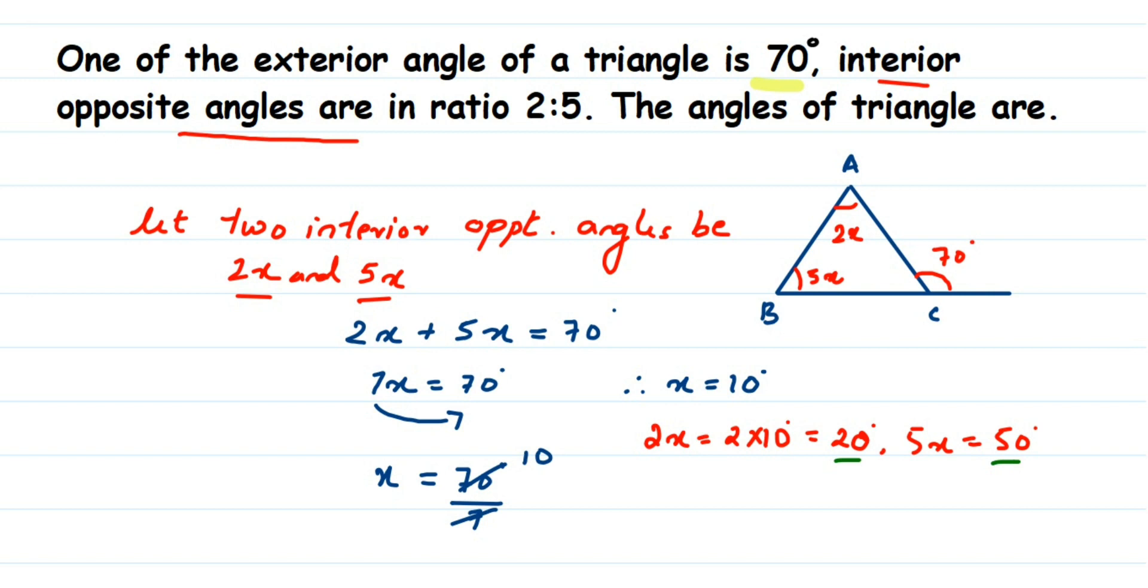So this will be 20 plus 50 plus y will be equal to 180 degrees because sum of all angles in triangle is 180. Interior angle is 180. So 20 plus 50 is 70. So 70 plus y is equal to 180 degrees.